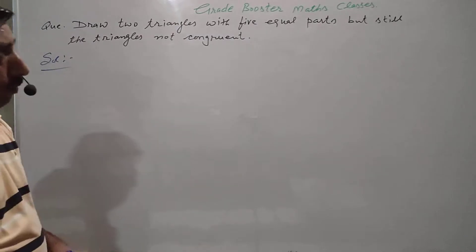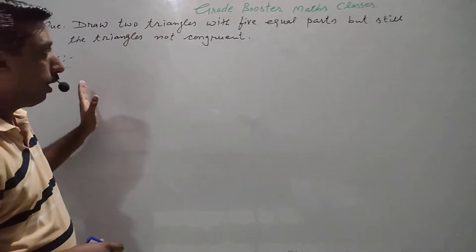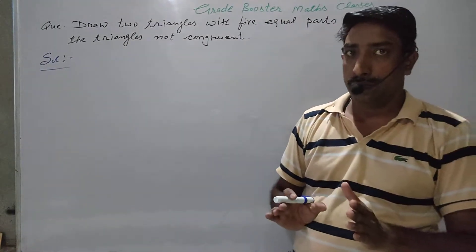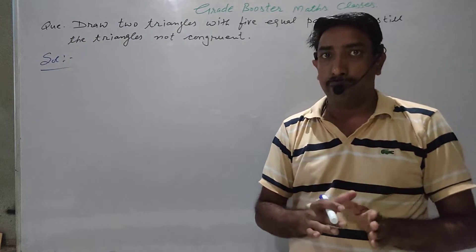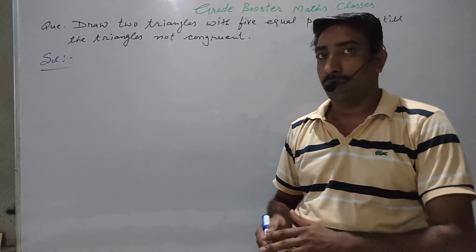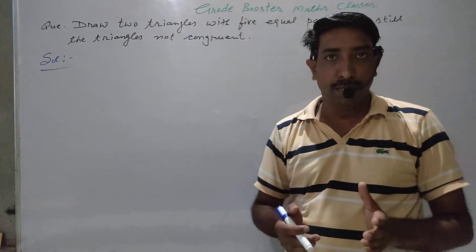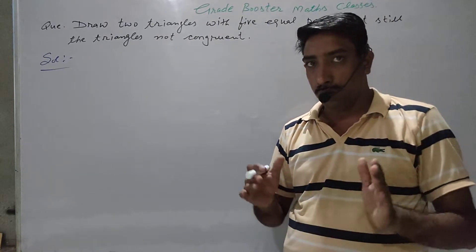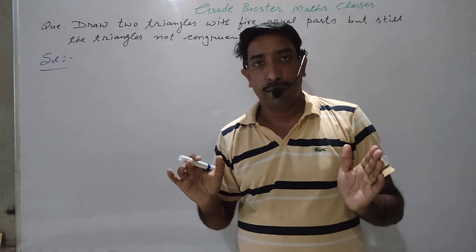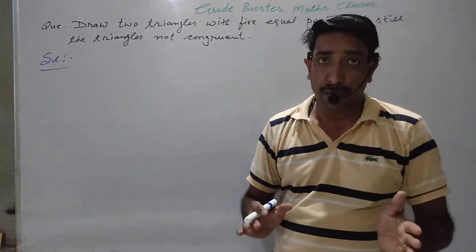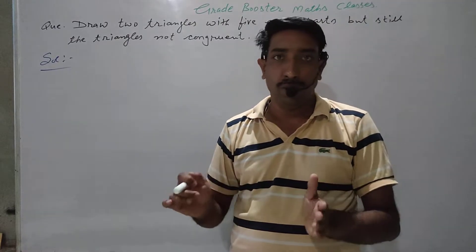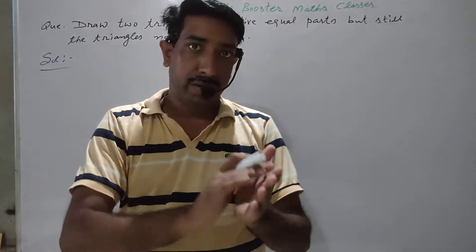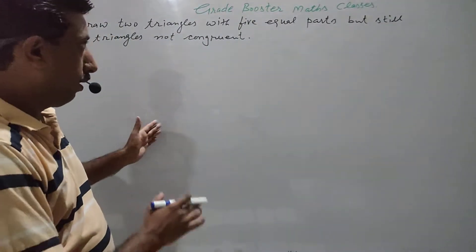Draw two triangles with five parts equal but still the triangles are not congruent. We have to draw two triangles where five parts of one triangle are equal to five parts of another triangle. Parts means angles and sides. A triangle has three sides and three angles, so total six parts. Out of the six parts, five parts of one triangle are equal to five parts of another triangle, and the triangles should not be congruent.